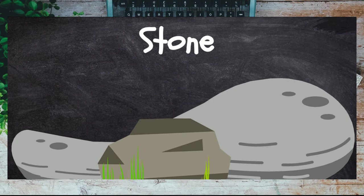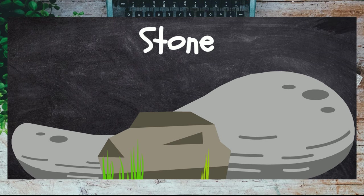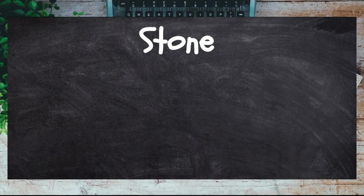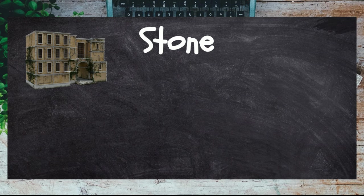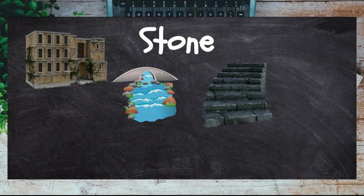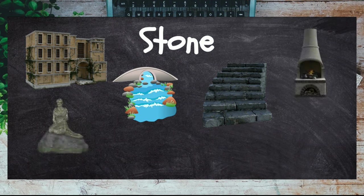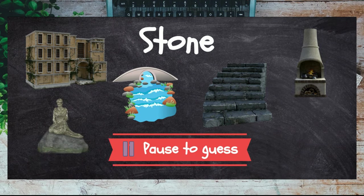Stone is a very strong and durable material, which makes it great to use for buildings and structures. Houses, stairs, and bridges can all be made out of stone. It is also easy to carve stone, so statues and plant pots are usually made out of stone. What else is made out of stone?